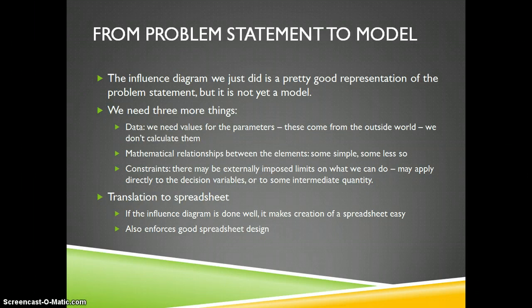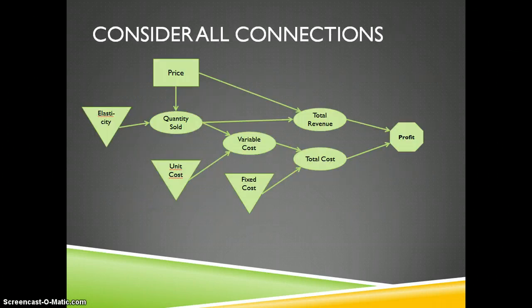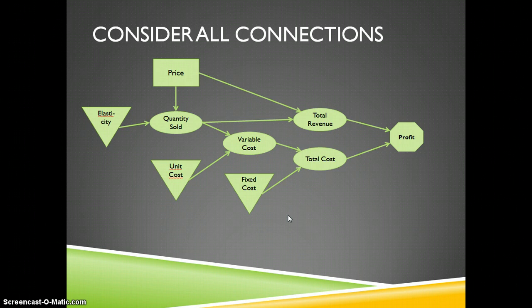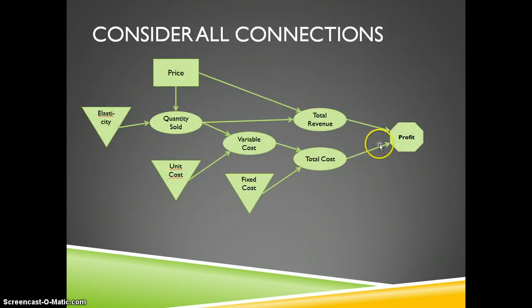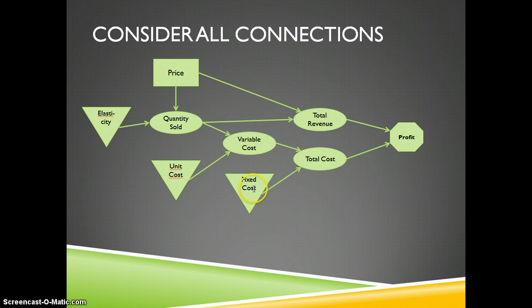What we have now is a pretty good representation of our problem statement, but we haven't yet made it into a model — we need three more things. First, going back to all the triangles, these are bits of data we have to get from the outside world. As long as they're available, we can create a model to input a price and calculate a profit. Next, we need mathematical relationships between the elements: profit equals revenue minus cost, total cost equals total variable cost plus total fixed cost, and total revenue equals price times quantity sold.